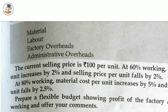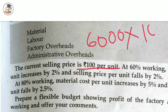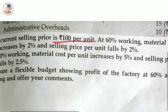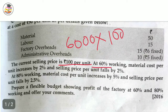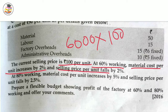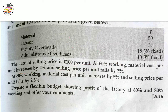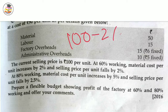At 60% capacity, selling price is 98 per unit. So 98 × 6,000 = 5,88,000. At 80% capacity, the selling price decreases by 2.5%, so in your calculator: 100 minus 2.5% = 97.5. So 97.5 × 8,000 = 7,80,000.